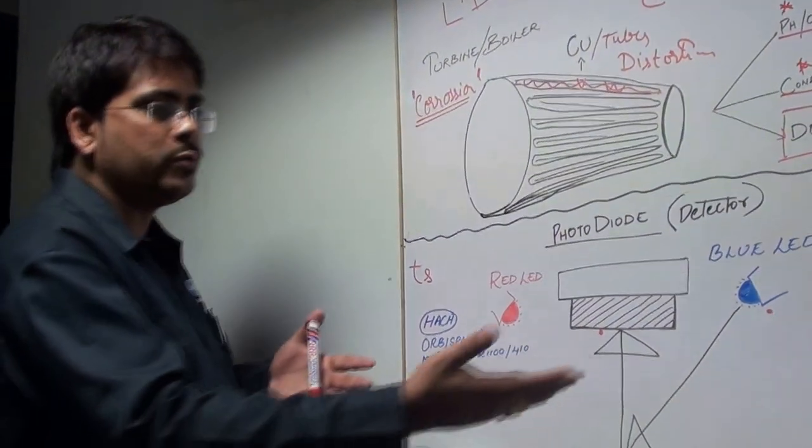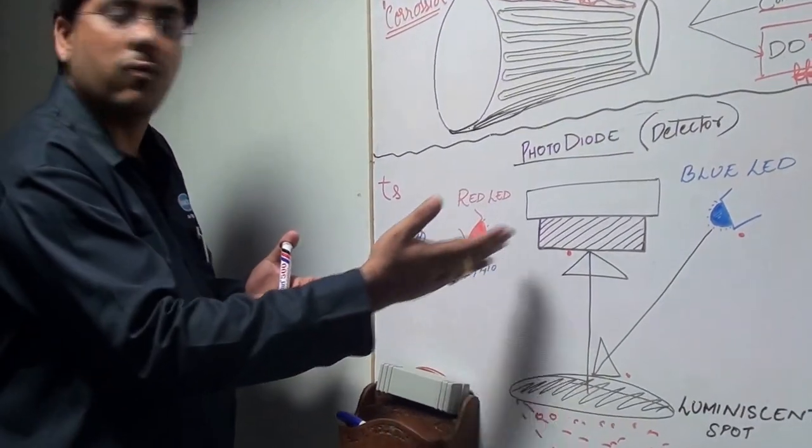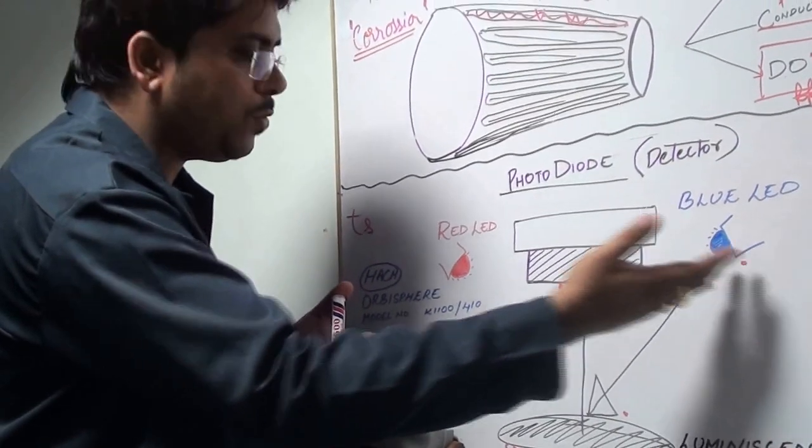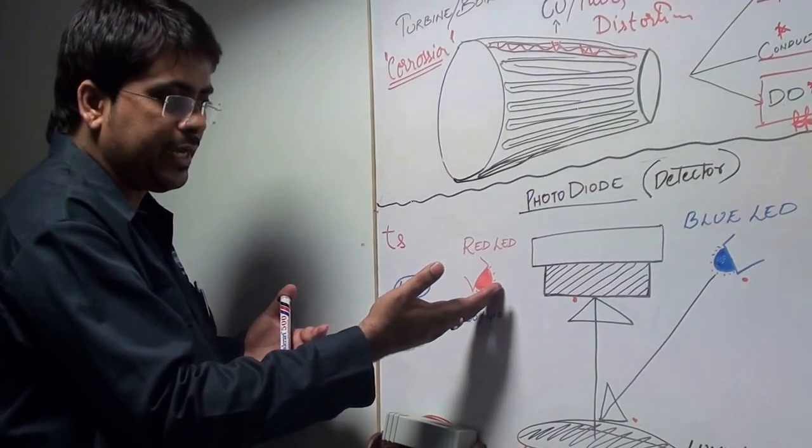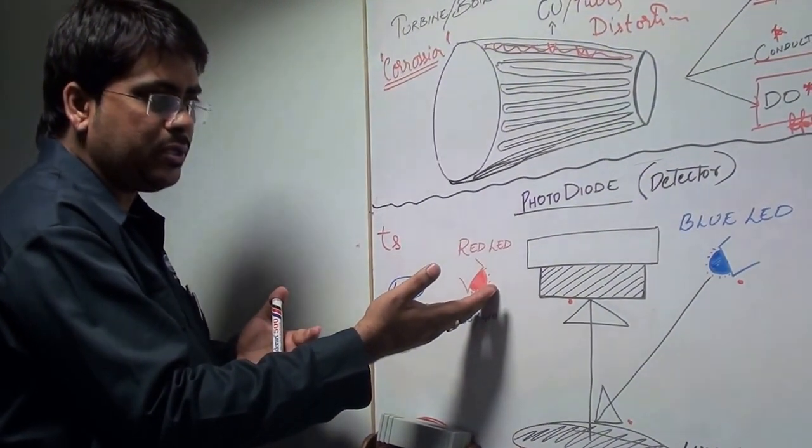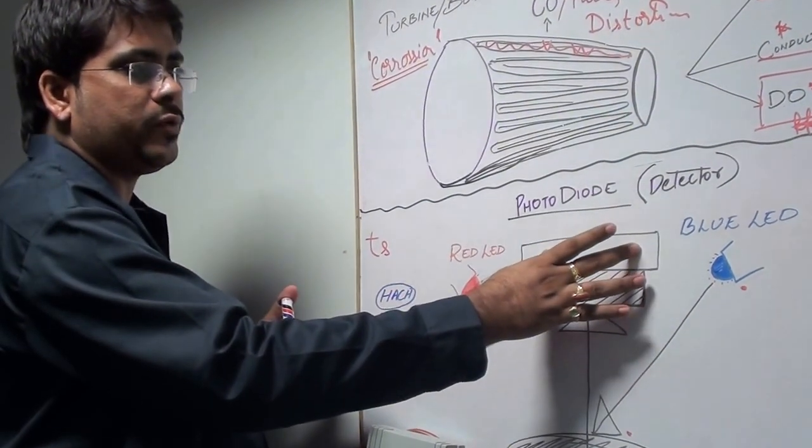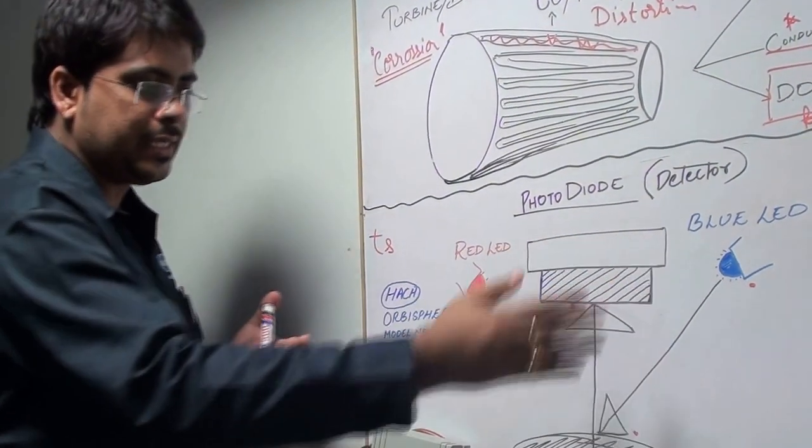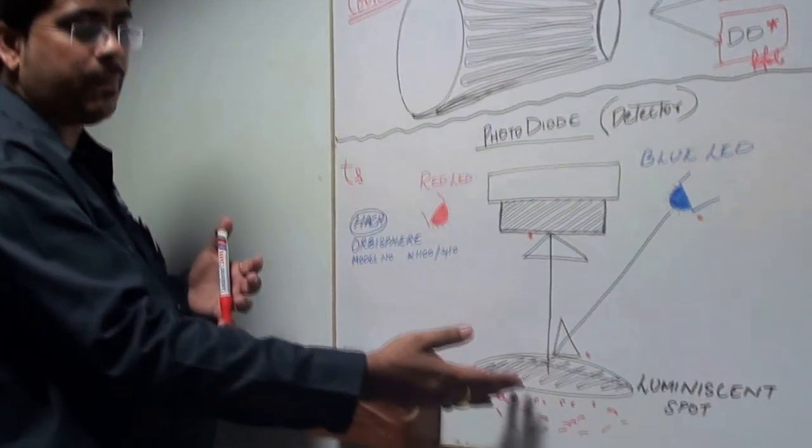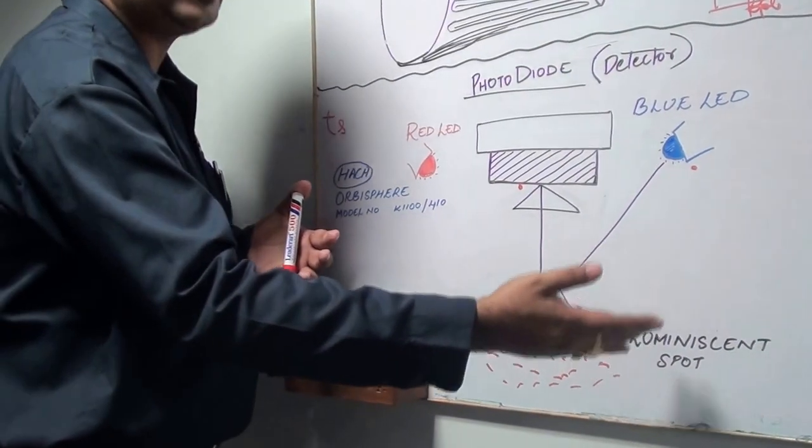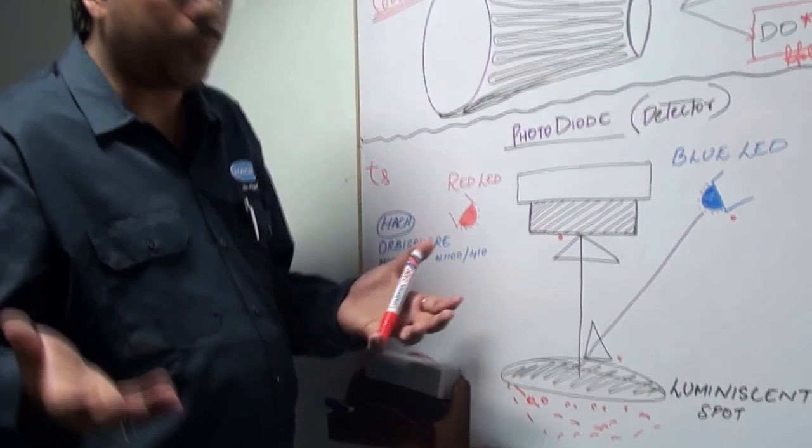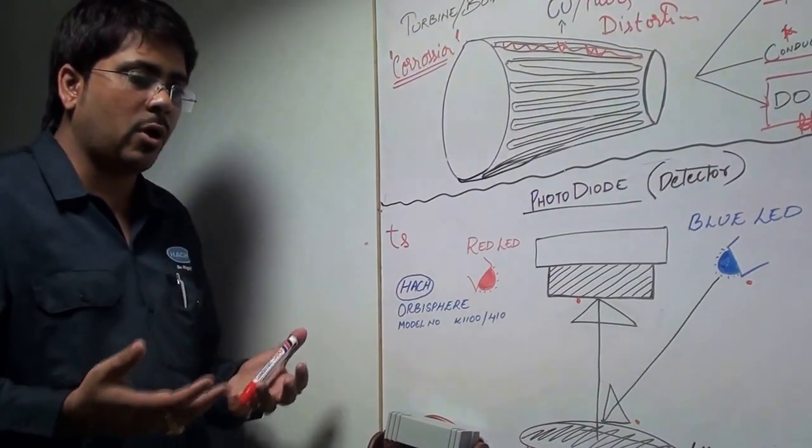In the new system, we specifically use two LEDs: one is the blue light-emitting diode, another is red light-emitting diode, and there is a photodiode which acts as a detector for the light.